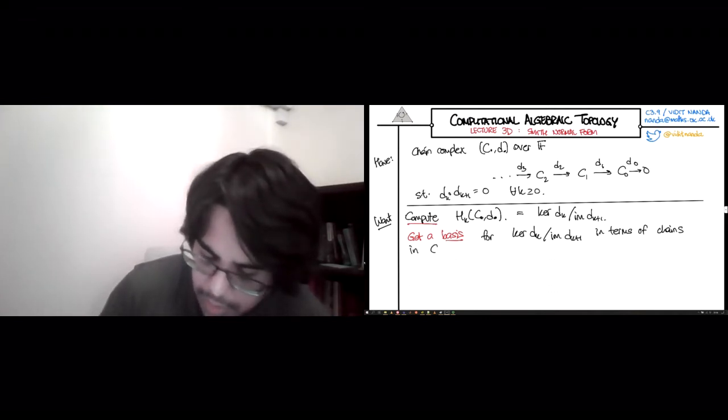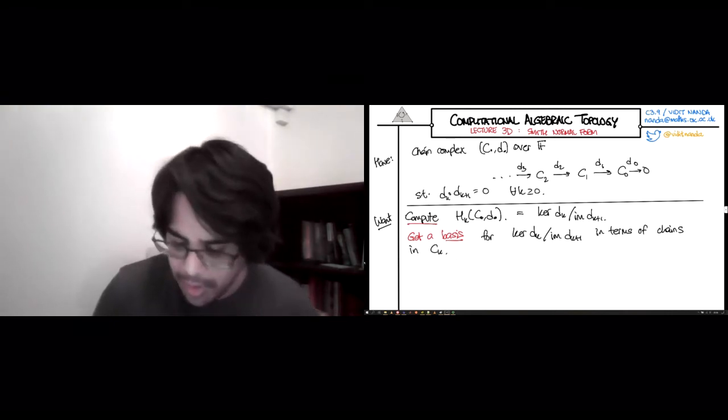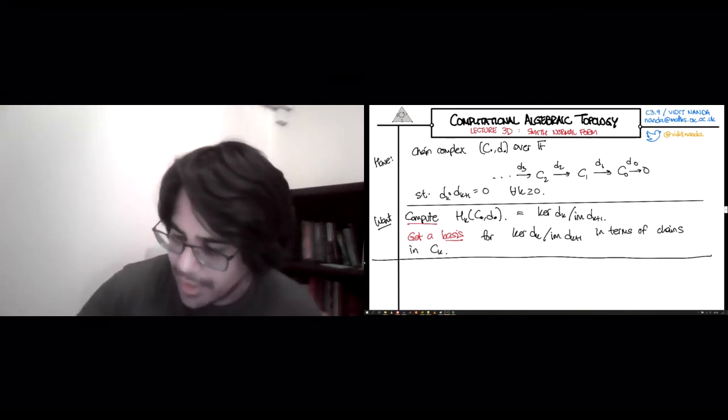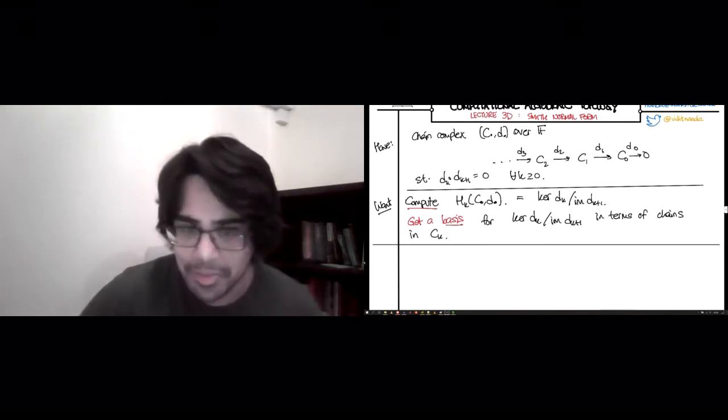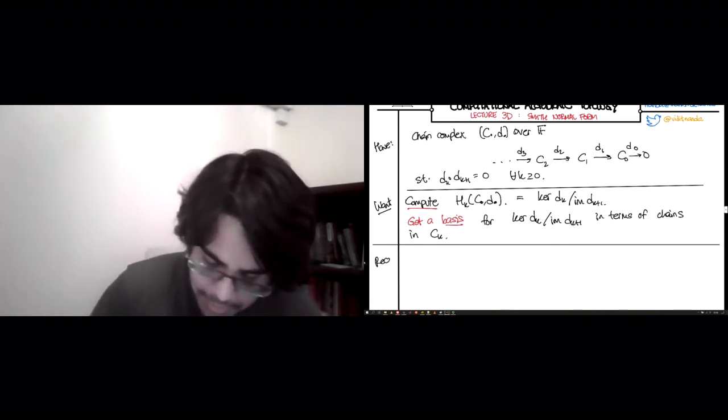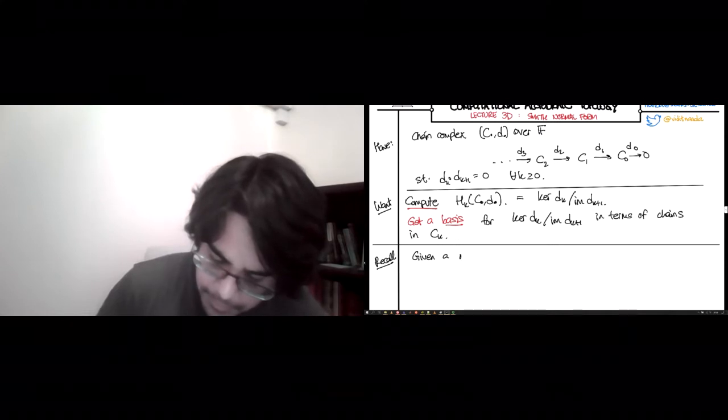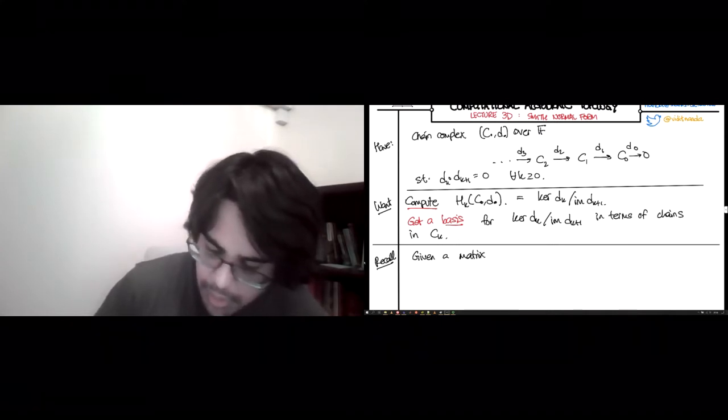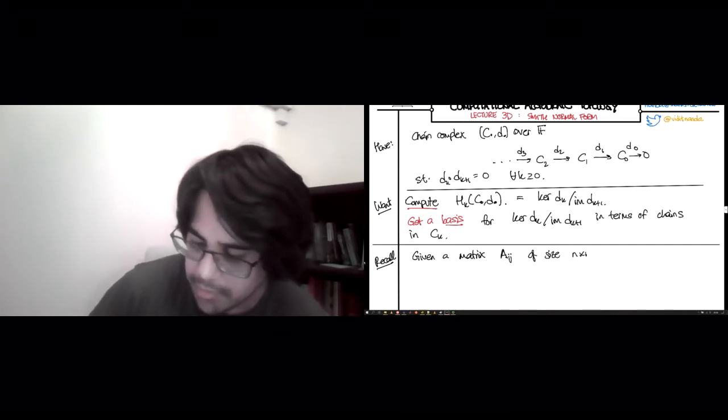This group is the kernel of dk quotient the image of dk+1. And so, we will try to get a basis for kernel dk quotient image dk+1 in terms of chains in ck. So, that's the goal of this lecture. And all we need is a little bit of basic linear algebra. And since I don't want to assume that people are overly familiar with linear algebra, just enough to be dangerous.